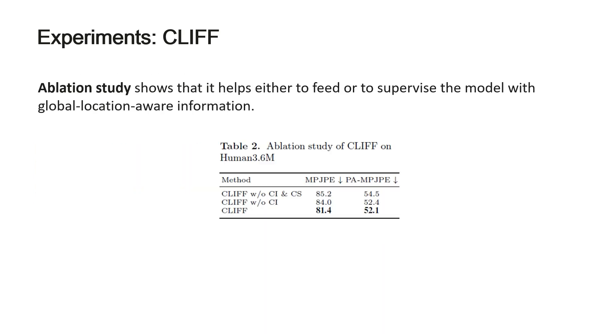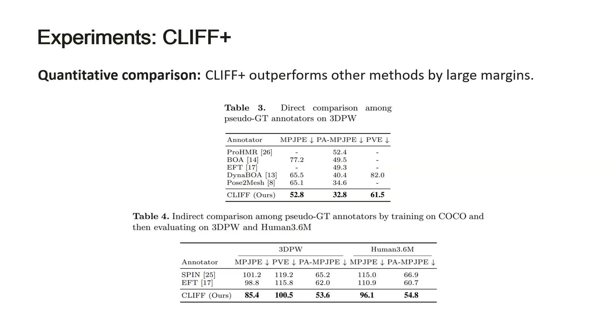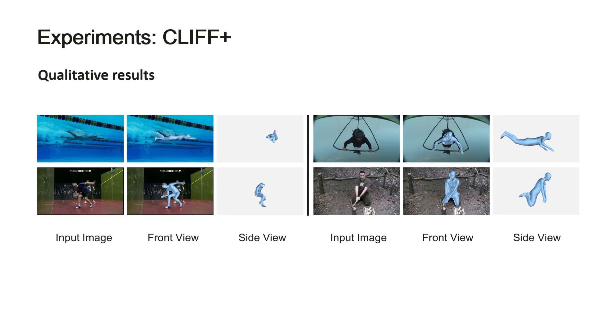Ablation study shows that it helps either to feed or to supervise the model with global location-aware information. The pseudo-ground truth annotator CLIFF+ also outperforms other methods by large margins. Here are some pseudo-ground truth samples generated by CLIFF+.